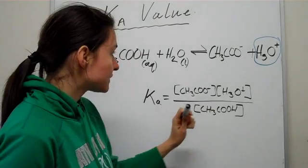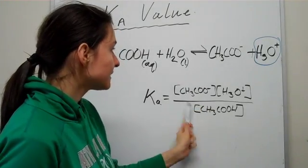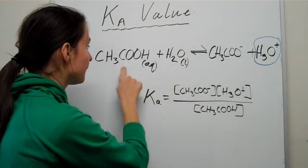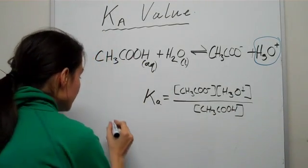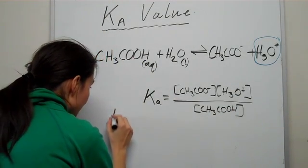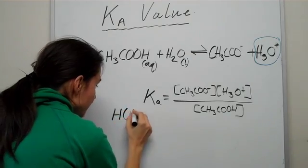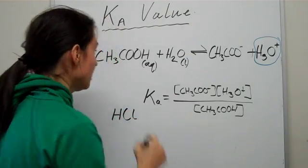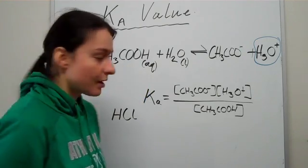The Ka value is defined as the products divided by the reactants for any given equation. This is the Ka value for acetic acid. Let's have a look at another acid, another very famous acid HCl. Now what you know about HCl is it's a lot stronger than CH3COOH.